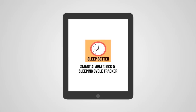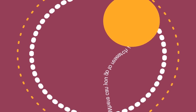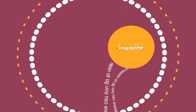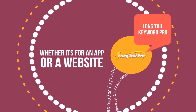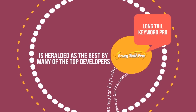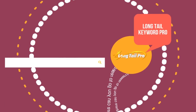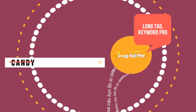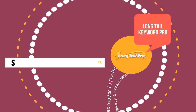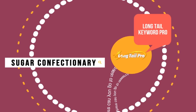Don't hesitate to put keywords into the title as well. The three tools I use for ASO are as follows. Long Tail Keyword Pro is heralded as the best by many of the top developers, whether it's for an app or a website. A common error that app publishers make is to only target single-word keywords. By targeting long tail keywords, it can significantly heighten the chance of ranking high because there is far less competition.